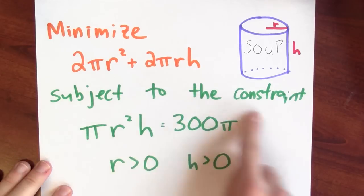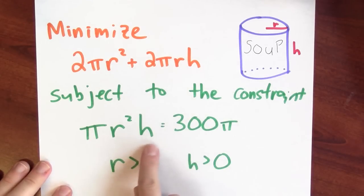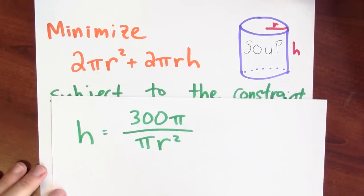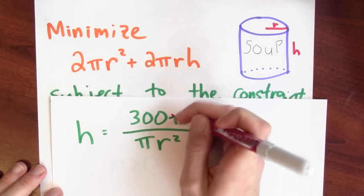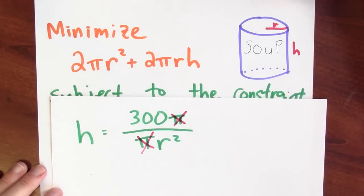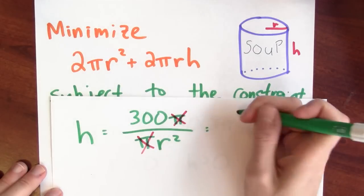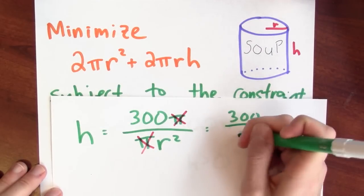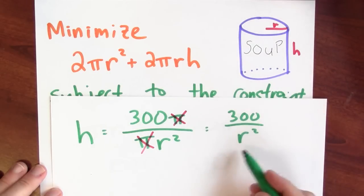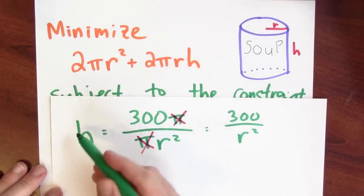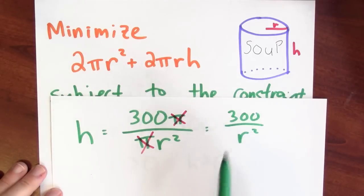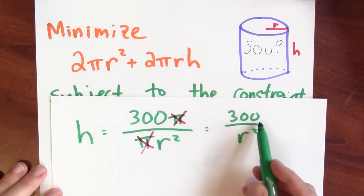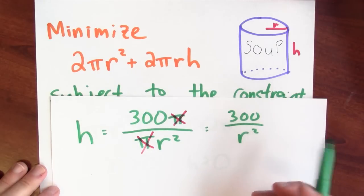Let's take this constraint and solve for h. If I start doing that, h is 300 pi over pi r squared. I can cancel these pis, and I'm just left with h is 300 over r squared. So for a given radius, this is how tall I need to make the soup can to guarantee that the soup can holds 300 pi cubic centimeters of soup.